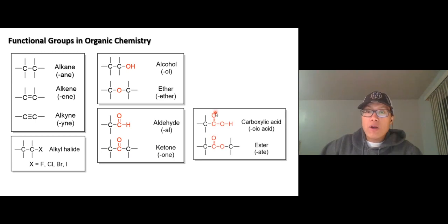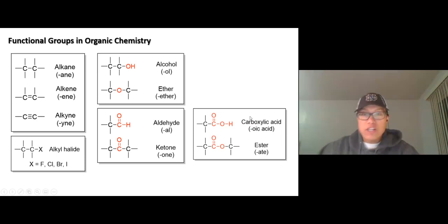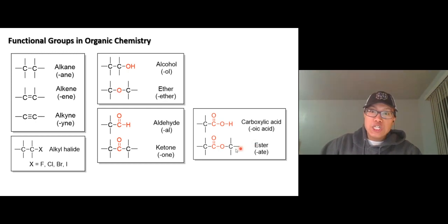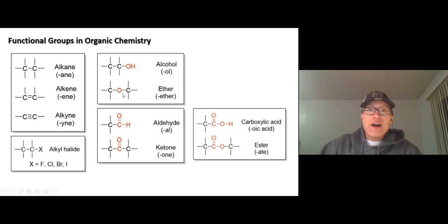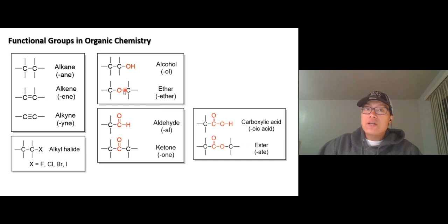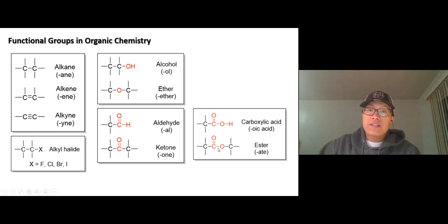If you see C double bond O with an OH, that's a carboxylic acid — the only acidic group among these functional groups. Now ester is not ether: ether has just one oxygen, but ester has C double bond O and an O. The C double bond O makes ester have very different reactivity than ether.